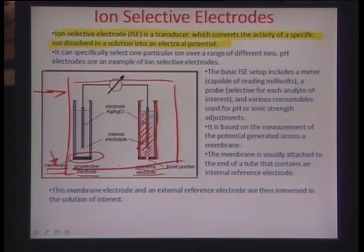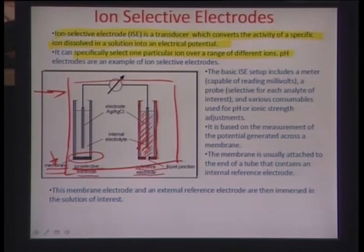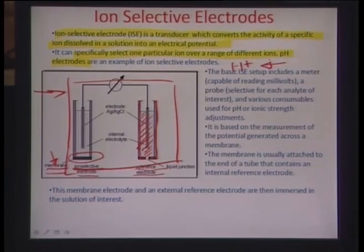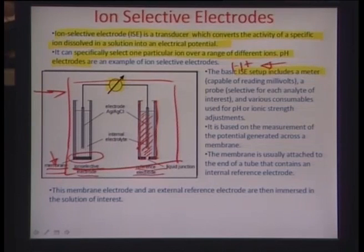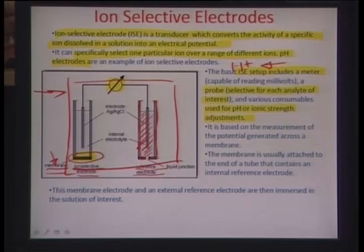The job of the ion selective electrode is to specifically select one particular ion over a range of different ions. Suitable examples are pH electrodes, which pick up only hydrogen ions and leave the others behind. The basic ISE setup includes a meter, a probe selective to each analyte — the selection done by the membrane — and various consumables used for pH or ionic strength adjustments.